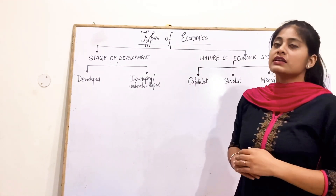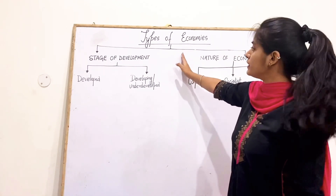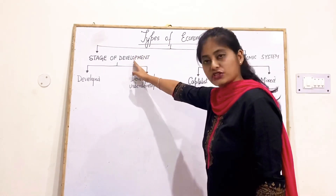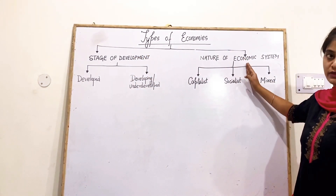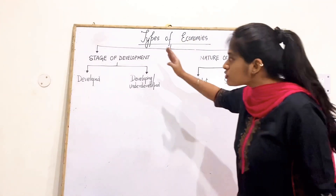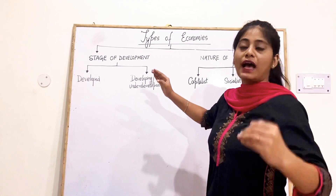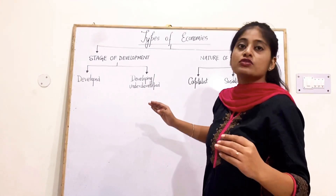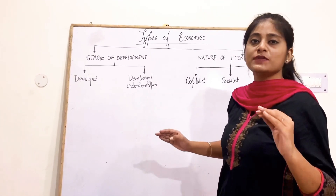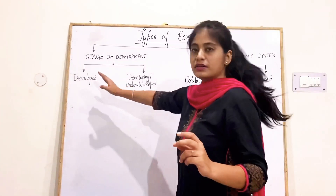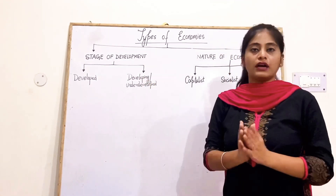The types of economies have been divided on the basis of stage of development and on the basis of the nature of the economic system. On the basis of stage of development — that is, how much developed an economy is — the economy has been divided into developed economy and developing or underdeveloped economy.